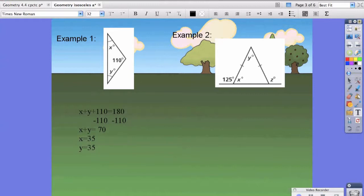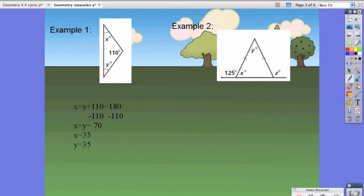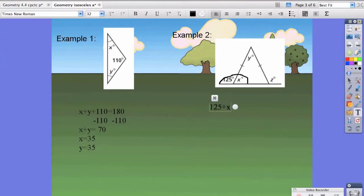If we look at example 2, we also have an isosceles triangle. Now, because we know the rules of supplementary angles, 125 degrees plus X degrees is supposed to be equal to 180.